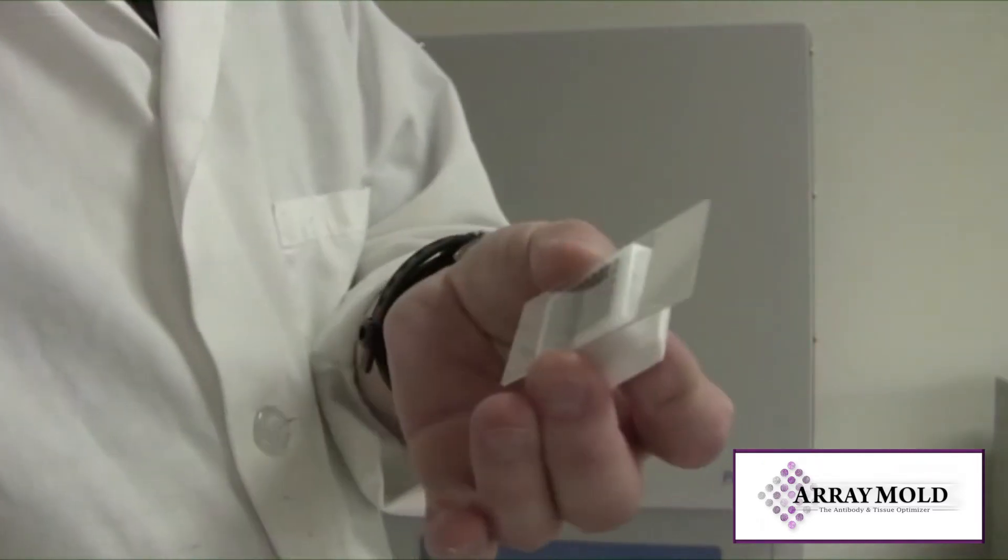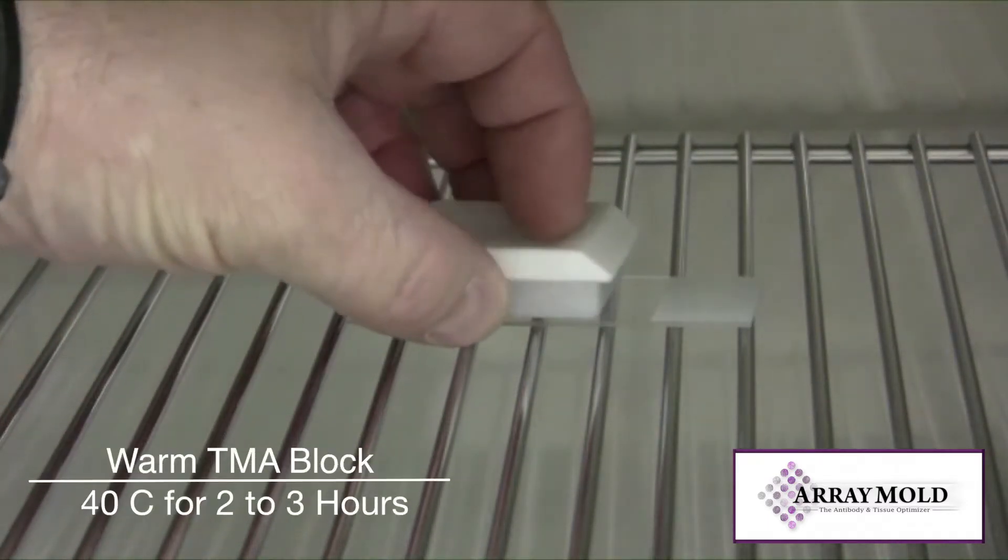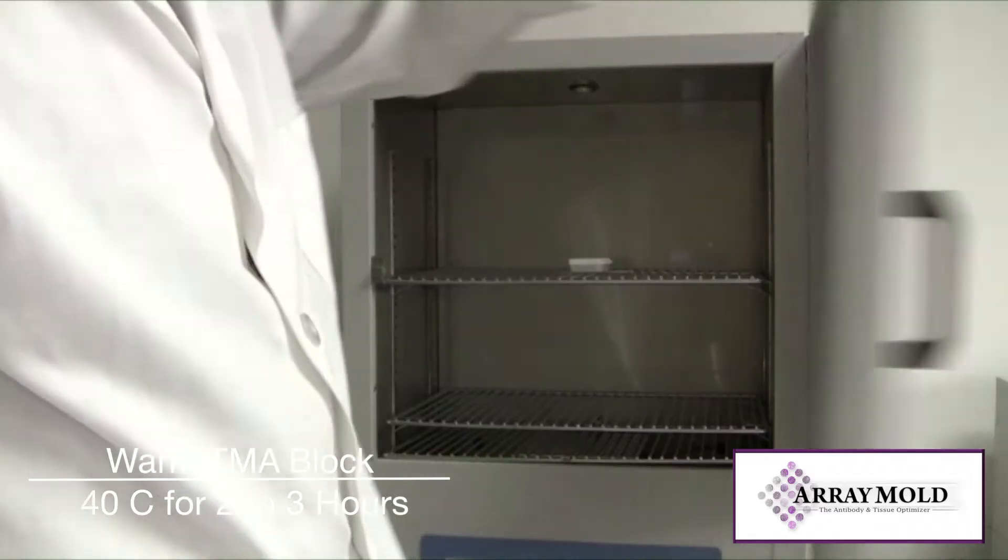Some people like to leave their array blocks in the oven overnight to soften and set the punches, but we have found two to four hours works just fine for us. You may want to test this for yourself because some tissues might need more setting time.